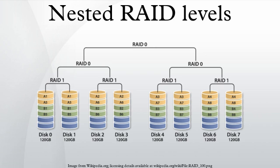Very large arrays using protocols like iSCSI would become more common. Pictured as an example is three collections of 120 GB RAID 1 arrays striped together to make 360 GB of total storage space.